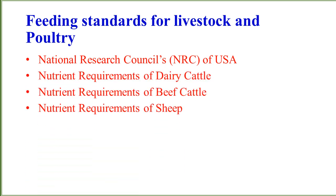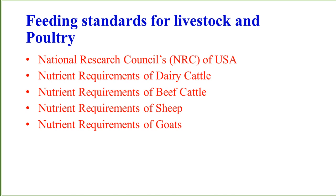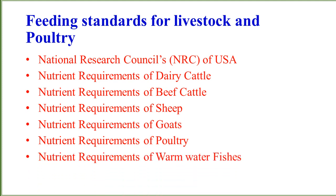The feeding standards we may follow for the production of animals are enlisted here. The very first one, which is very famous and mostly followed — especially in Pakistan — is the National Research Council (NRC) of the USA. These are very complete, simple, but most researched standards. The next ones cover nutrient requirements of dairy cattle, beef cattle, sheep, goats, poultry, and fish. The nutrient requirements of animals may be adjusted according to the feeding standards provided in all these feeding charts.